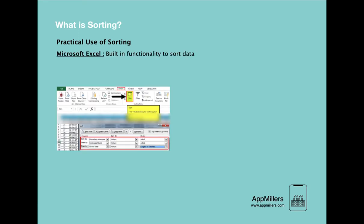Now let's see some practical examples of sorting. The first example is Microsoft Excel. If you have ever used Excel, you might know there is a built-in function used to sort data in either ascending or descending order. From this picture you can see there is a sort icon under the data tab in Excel. By using this, we can sort any given column — if the column is a date column and we select ascending order, it will sort the data accordingly, and if it consists of strings it will sort them from A to Z.